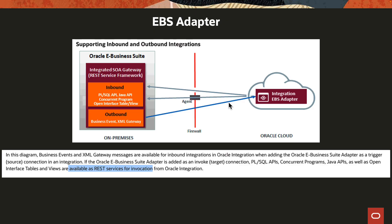You already know that there is an EBS adapter that's been there for years now, which exposes PL/SQL, Java, concurrent programs, and open interface tables as APIs, which you can call from your integration flow. It also supports outbound, so if you want to trigger an integration based on an event in EBS, you can do that as well. Different modes of connectivity — if there is a public API available, it can directly go and access it; if not, you would use the agent to access the APIs.